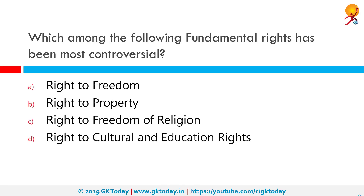Which among the following fundamental rights has been most controversial? The correct answer is the right to property. The 44th Amendment of 1978 deleted the right to property from the list of fundamental rights. A new provision, Article 300A, was added to the constitution, which provided that no person shall be deprived of his property save by authority of law.